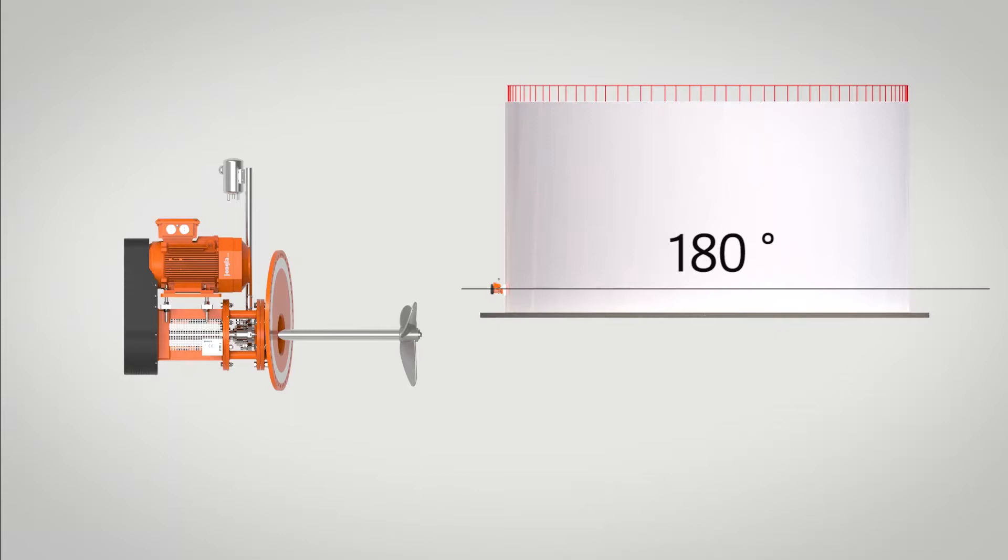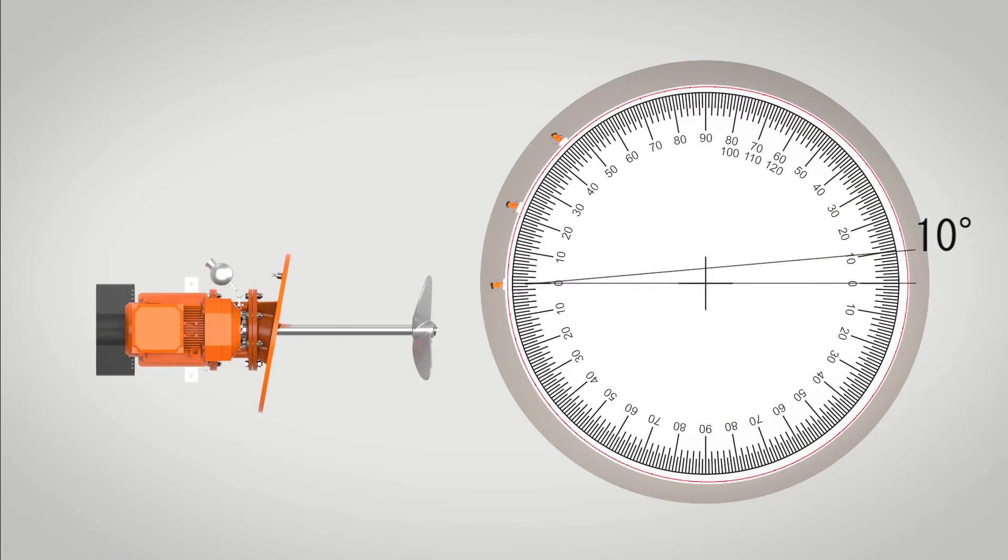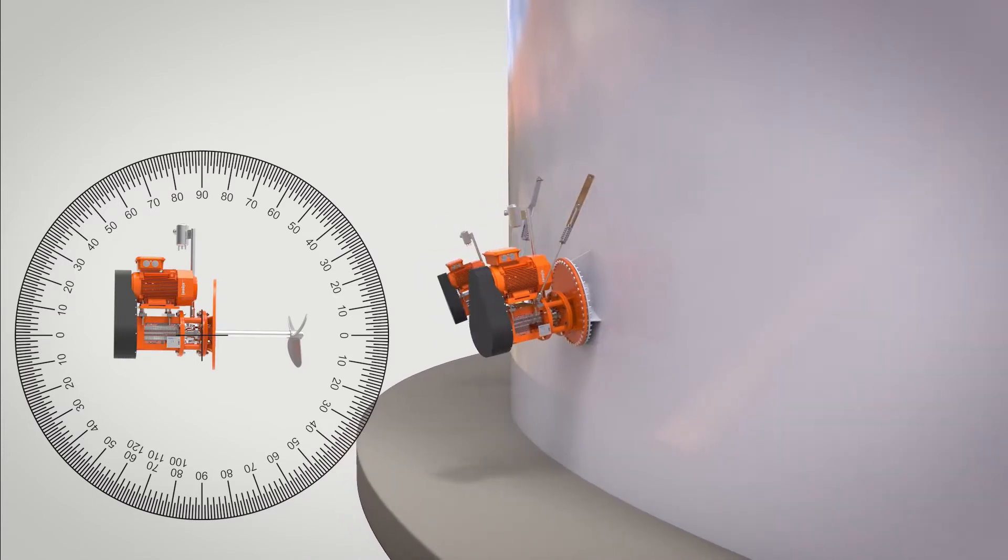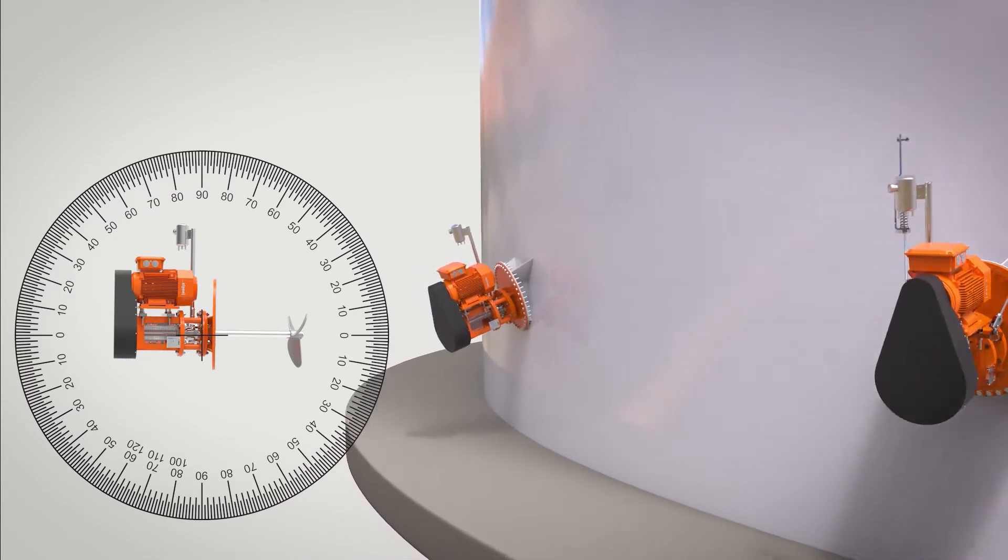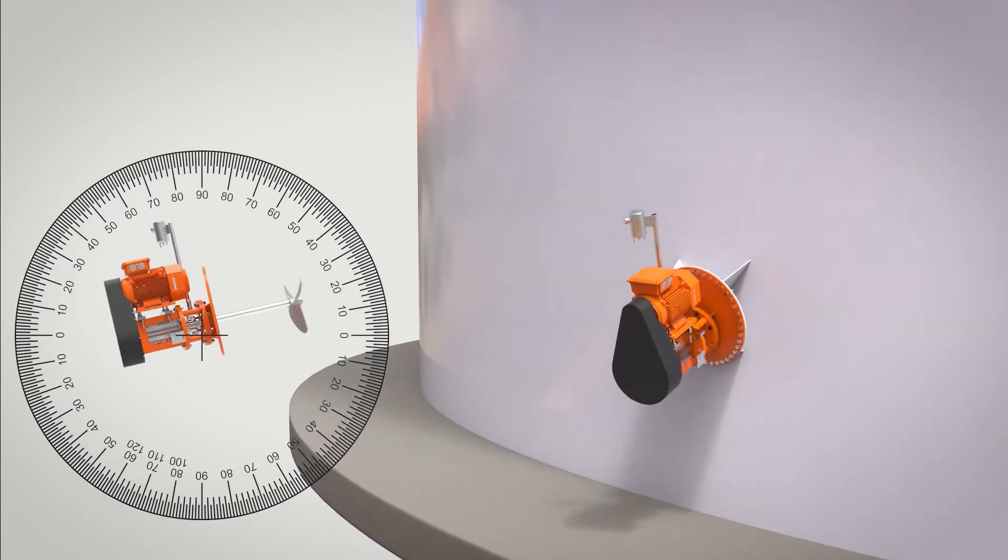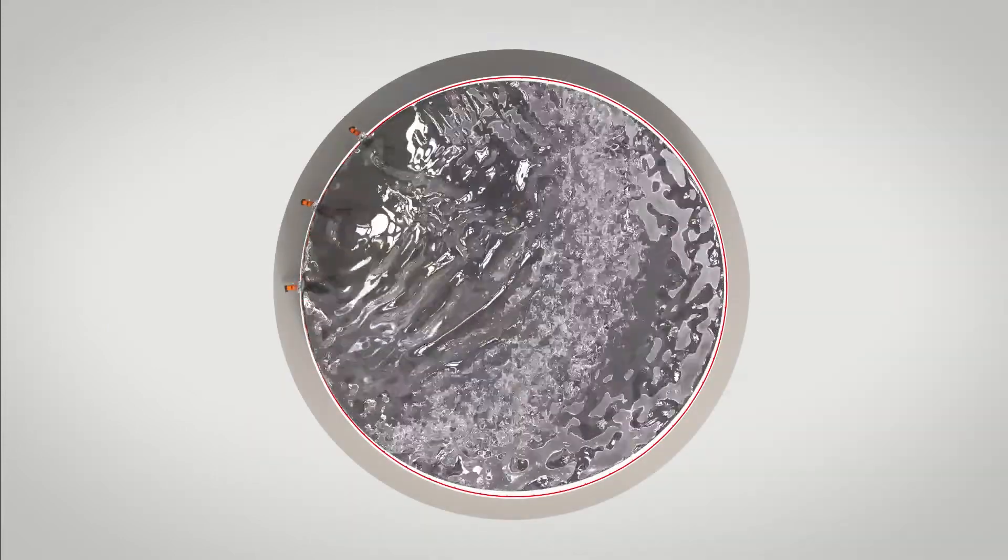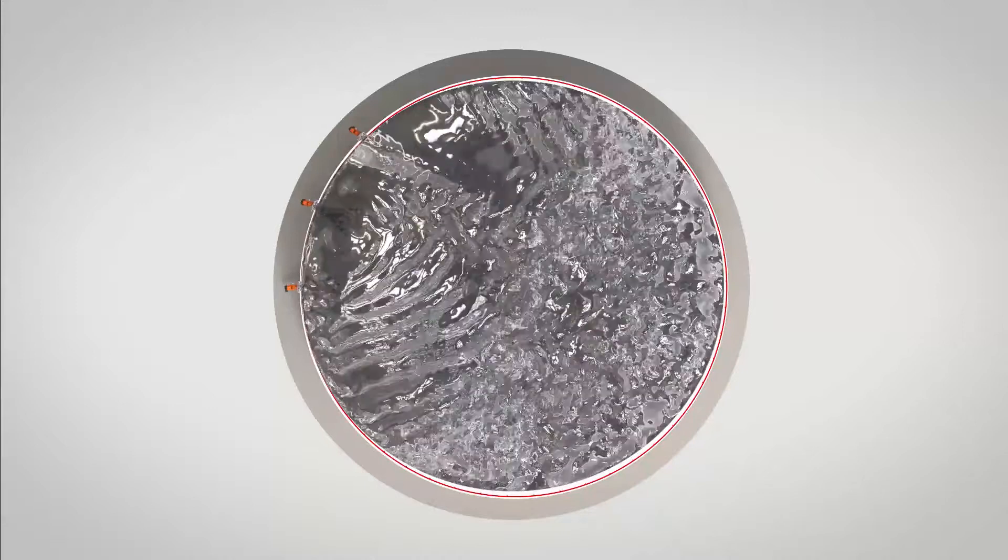Side-entry mixers are installed horizontally at a 10 degree angle. When multiple mixers are installed, they'll be positioned in a sequence of 0 degrees, 10 degrees, and 20 degrees upwards. This way, a powerful induced flow throughout the entire tank is created.